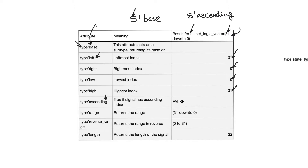The range attribute returns the range of the signal, and reverse range returns the reverse range. Length returns an integer which is the length of the signal.